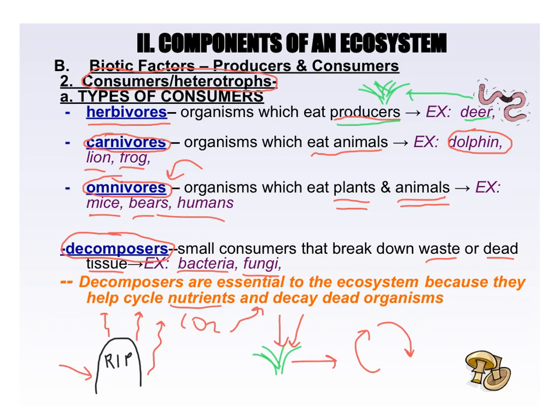A habitat is kind of like the home of an organism — where can you find it? So if you wanted to find a gopher, its natural habitat is grasslands; it also likes to bury itself underneath the ground in a hole. If you're looking for a shark, you're going to have to go into the ocean — coastal waters. Some sharks like warm water, some like cold. Where an organism can be found is called its habitat, or its home.